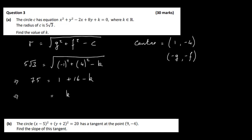Bringing the values over: 75 minus 16 minus 1 gives us 58. So minus k equals 58, meaning k equals minus 58.